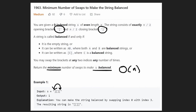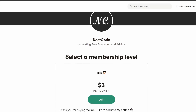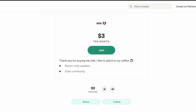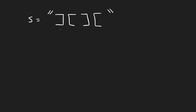Don't forget to like and subscribe if you find the video helpful, and consider checking out my Patreon if you'd like to support the channel. Now let's first try to actually understand this problem. Let's say we were given an input string — what's the minimum number of swaps to make this balanced?